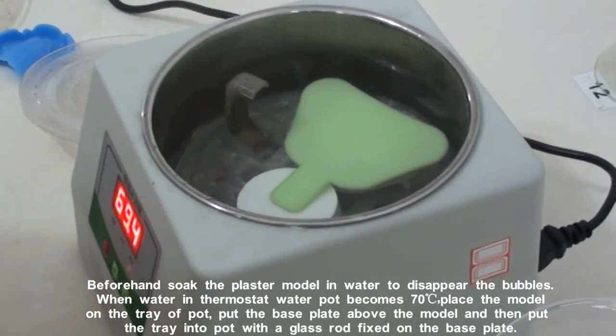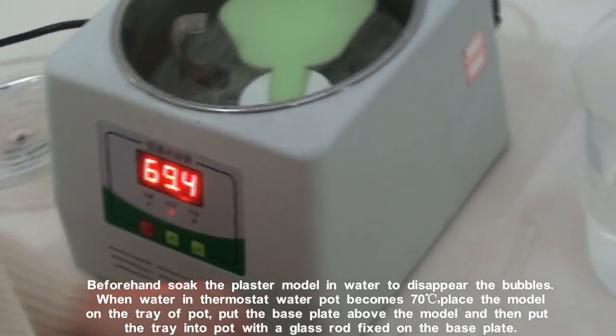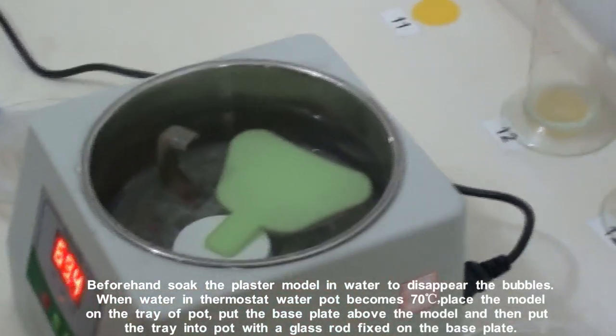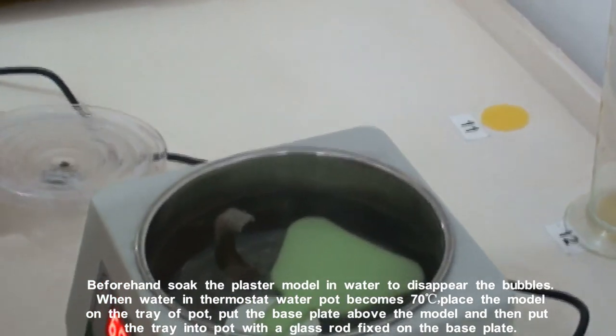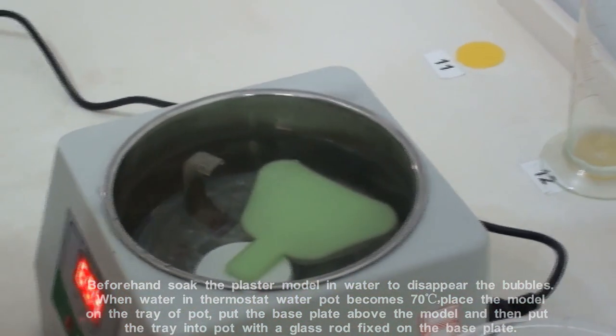When water in the thermostat water pot becomes 70 degrees centigrade, place the model on the tray of the pot, put the base plate above the model, and then put the tray into the pot with the glass rod fixed on the base plate.